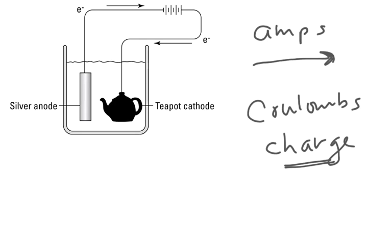Now, for chemistry, one of the things we need to know then is that one coulomb is equal to a one amp circuit going for one second. So one coulomb equals one amp times seconds.